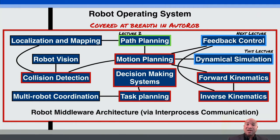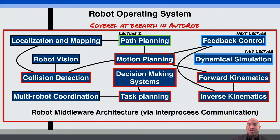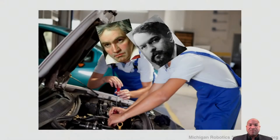Last time in lecture two, we covered path planning. This lecture, we'll talk about dynamical simulation — how we can simulate physics — and that's complementary to the next lecture on feedback control: once we have these systems and motors on them, how we can control those motors and deal with the physical system so we can make our robot do what we need it to do.